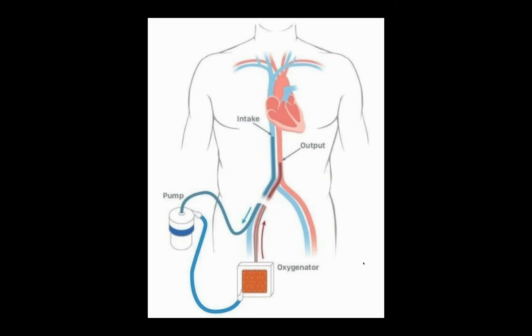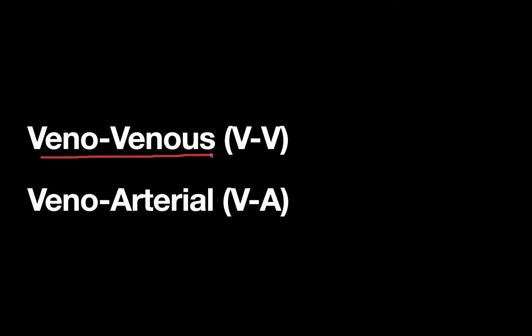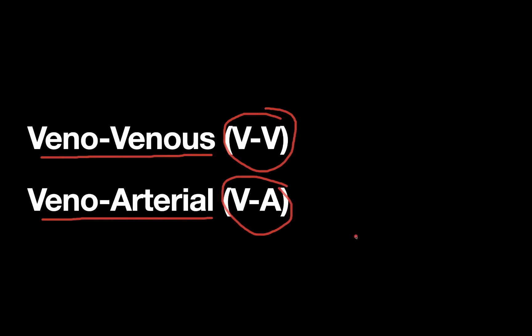There are a couple of different configurations of ECMO that we see commonly. There are two major types: one is called veno-venous or VV ECMO, and the other major type is veno-arterial or VA. The differences are all about the way the blood is returned to the patient. There are other configurations we won't go into here, but those can be addressed in a future video if you're interested.